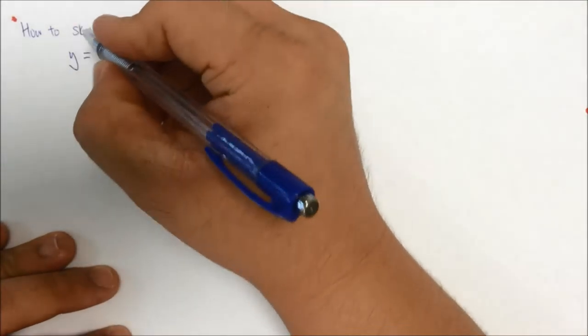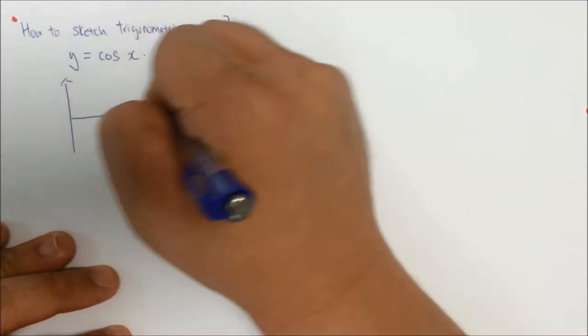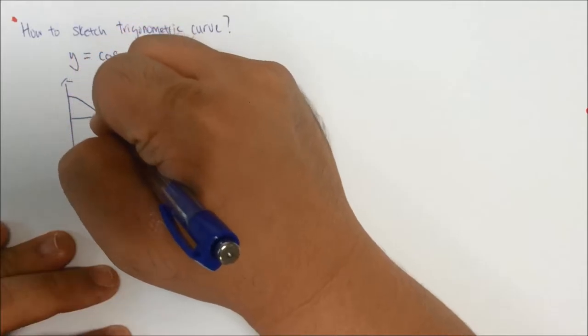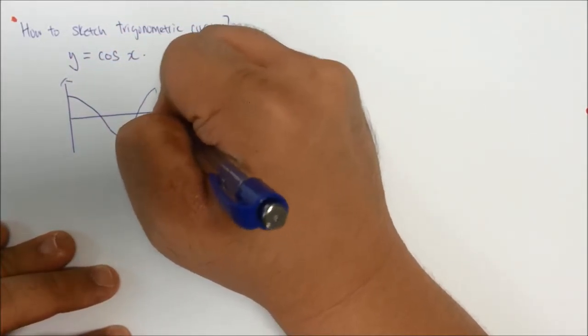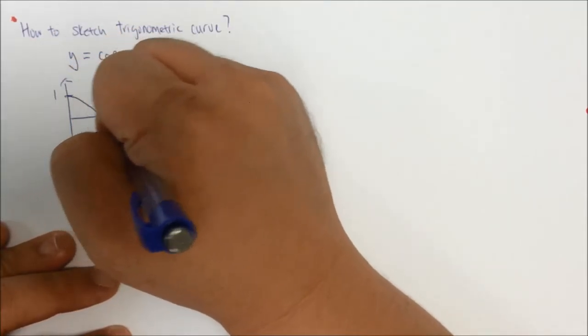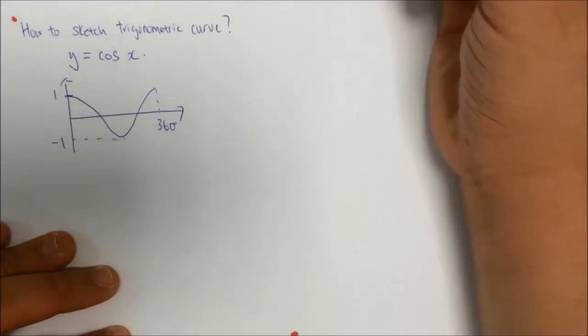For cosine x, first you have to know what is the basic shape. The basic shape looks like this. So this is actually 360 degrees, and our amplitude in this case is again 1 and negative 1.